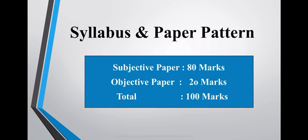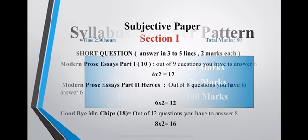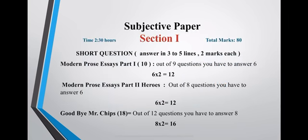Subjective paper is of 80 marks and objective paper is of 20 marks, total marks 100. Subjective paper is divided into two parts, time allowed 2 hours and 30 minutes and maximum marks 80. Subjective paper is divided into two parts: section 1 and section 2.